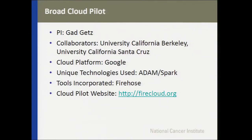We chose three cloud pilots because we wanted three different solutions to see what works. The first is the Broad Cloud Pilot, led by Gaddy Goetz, with collaborators at UC Berkeley and Santa Cruz. They've chosen Google as their cloud platform, using unique technologies including Adam and Spark, and have incorporated Firehose. They've chosen to call their cloud pilot FireCloud. Each of the three cloud pilots has its own website with a link to sign up for notifications and to evaluate the system once it opens.